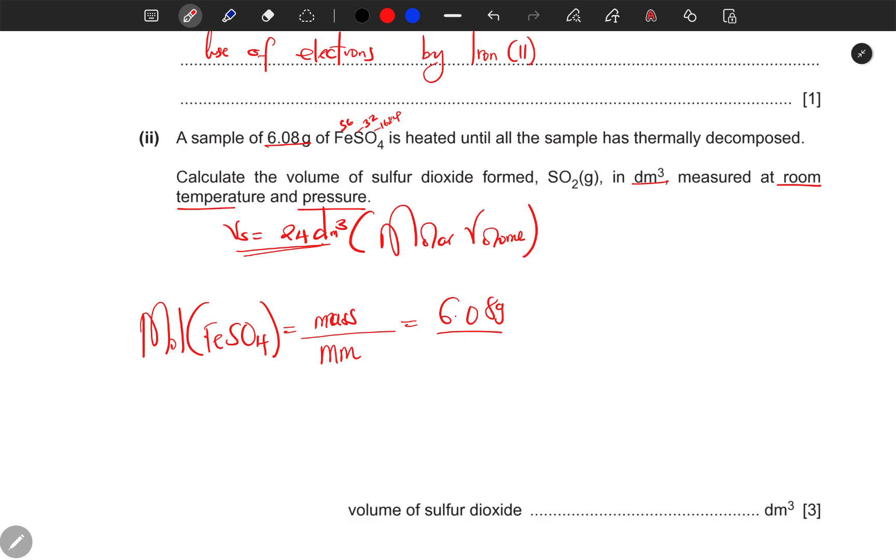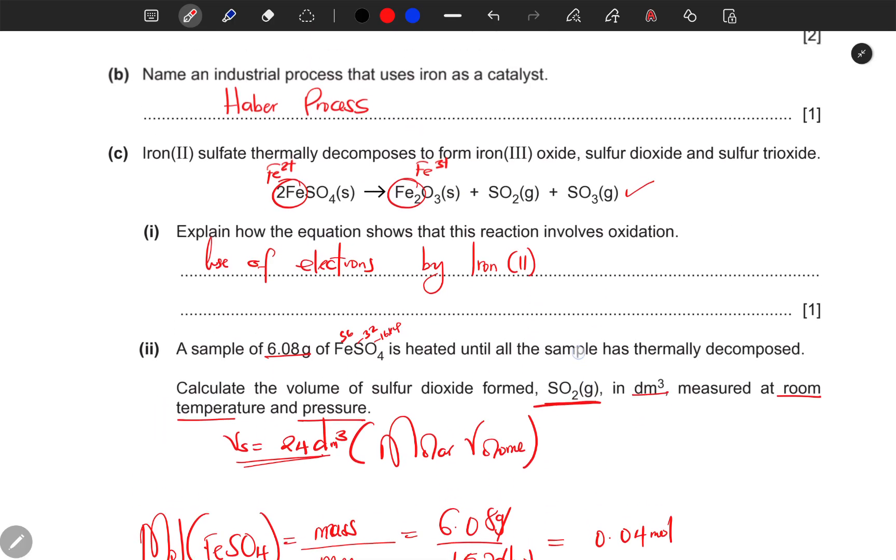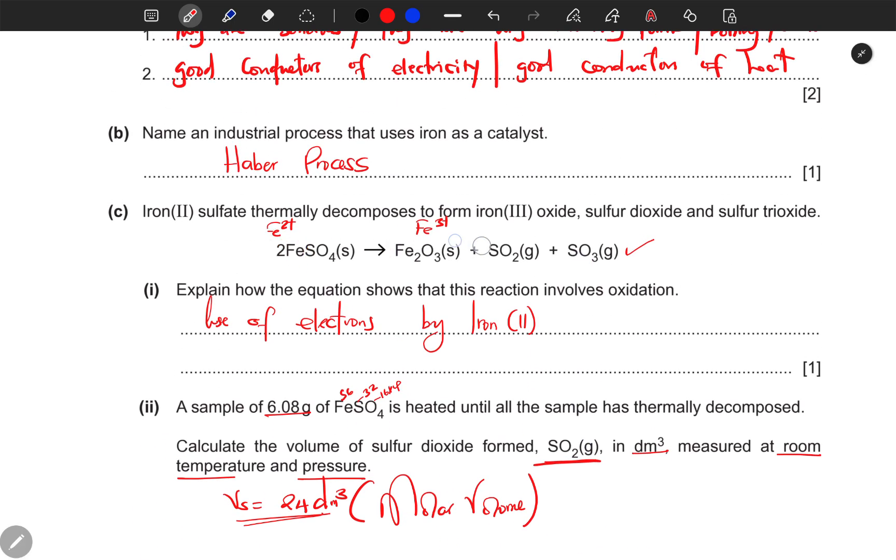So grams cancel, let's divide. I'm getting 0.04 moles. These are the moles of iron sulfate, but we are interested in this guy here, sulfur dioxide. So we go back to mole ratio. You can see that sulfur dioxide and iron sulfate are in the ratio of two to one.